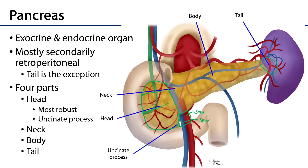Adjacent to the head is the neck of the pancreas, and contiguous with the neck is the body of the pancreas, which extends superior-left laterally out toward the spleen. The distal portion of the pancreas is the tail of the pancreas.